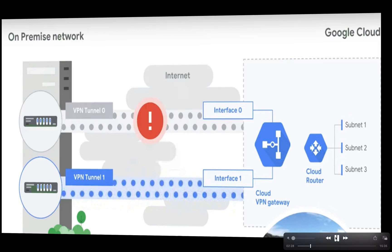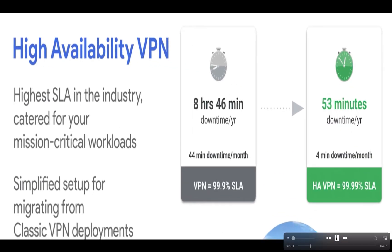High availability VPN offers the highest SLA in the industry, catered for mission critical workloads, with simplified setup for migrating from classic VPN deployments. Classic VPN has 8 hours 46 minutes downtime per year, 44 minutes downtime per month, with a 98.9% SLA. High availability VPN has only 53 minutes downtime per year, 4 minutes downtime per month, with a 99.99% SLA.